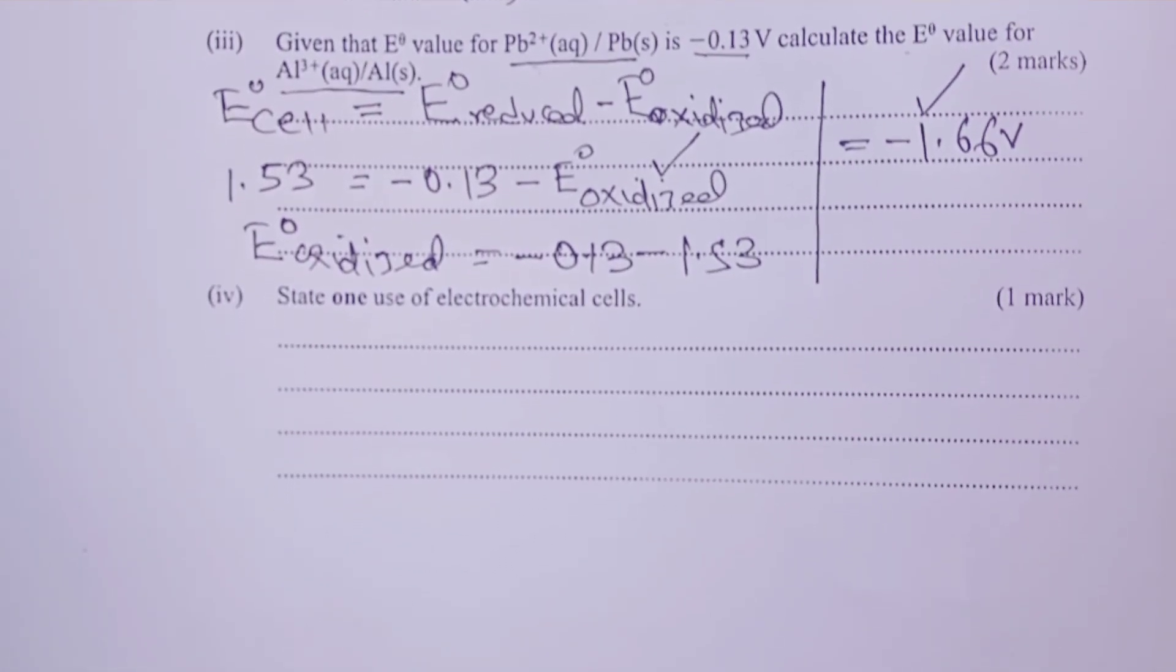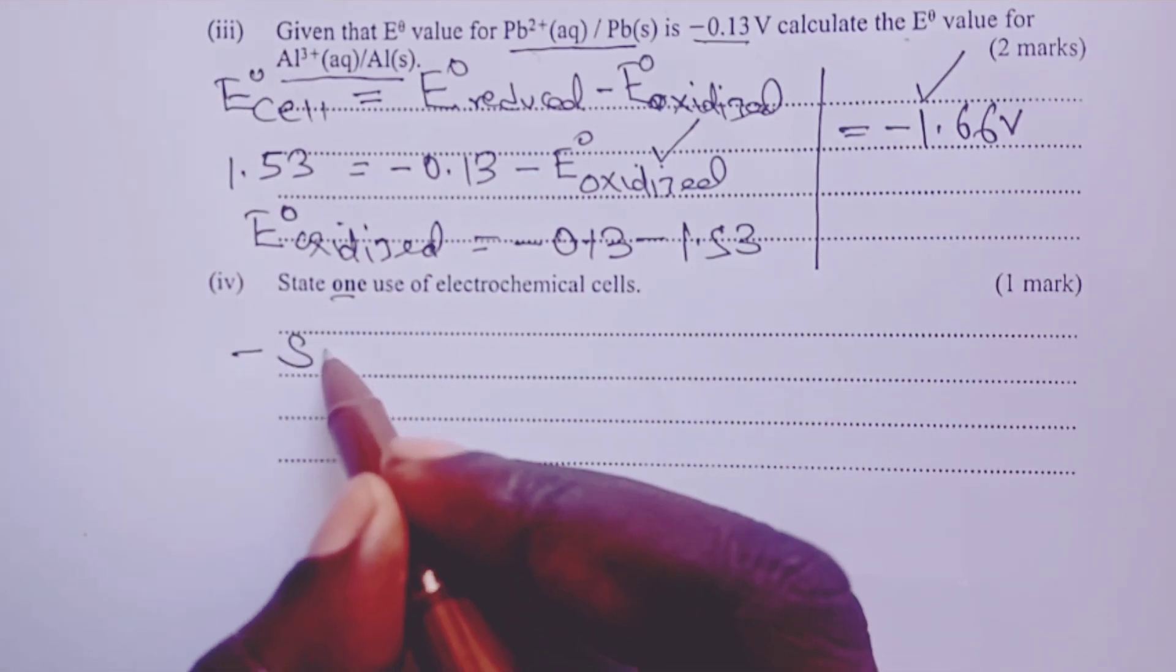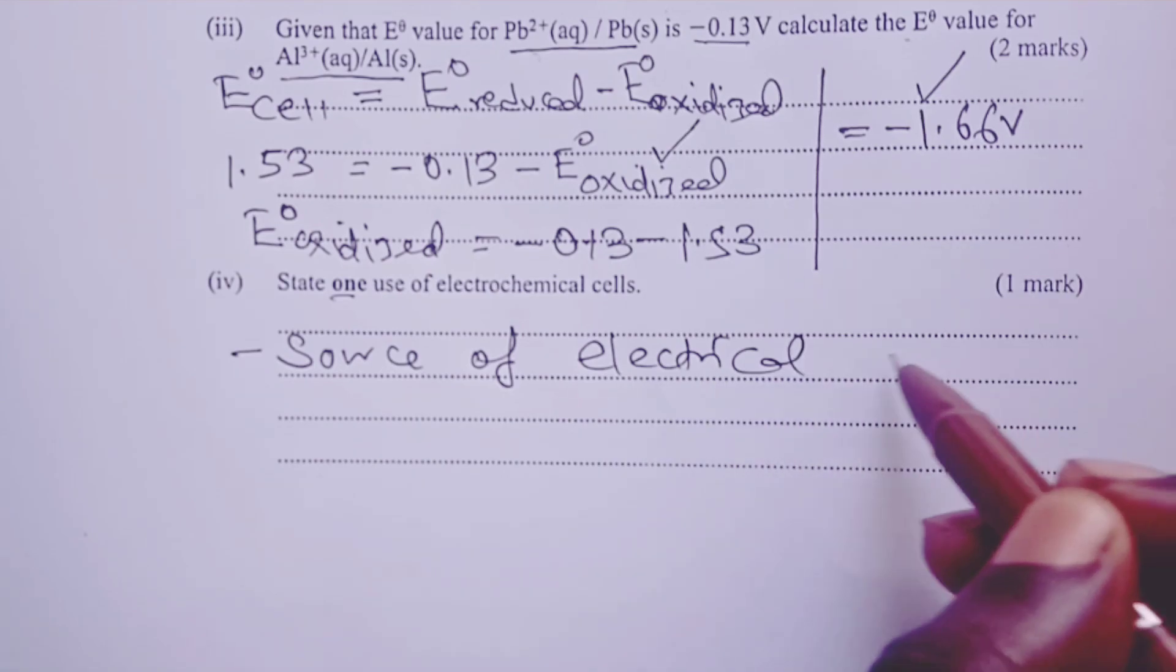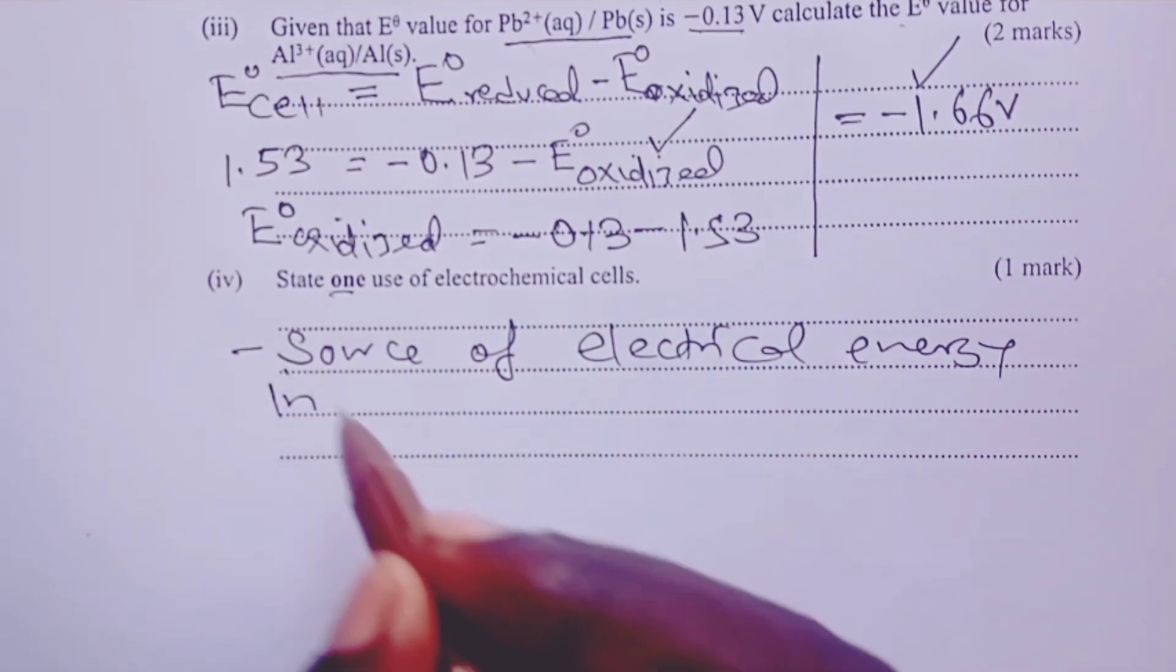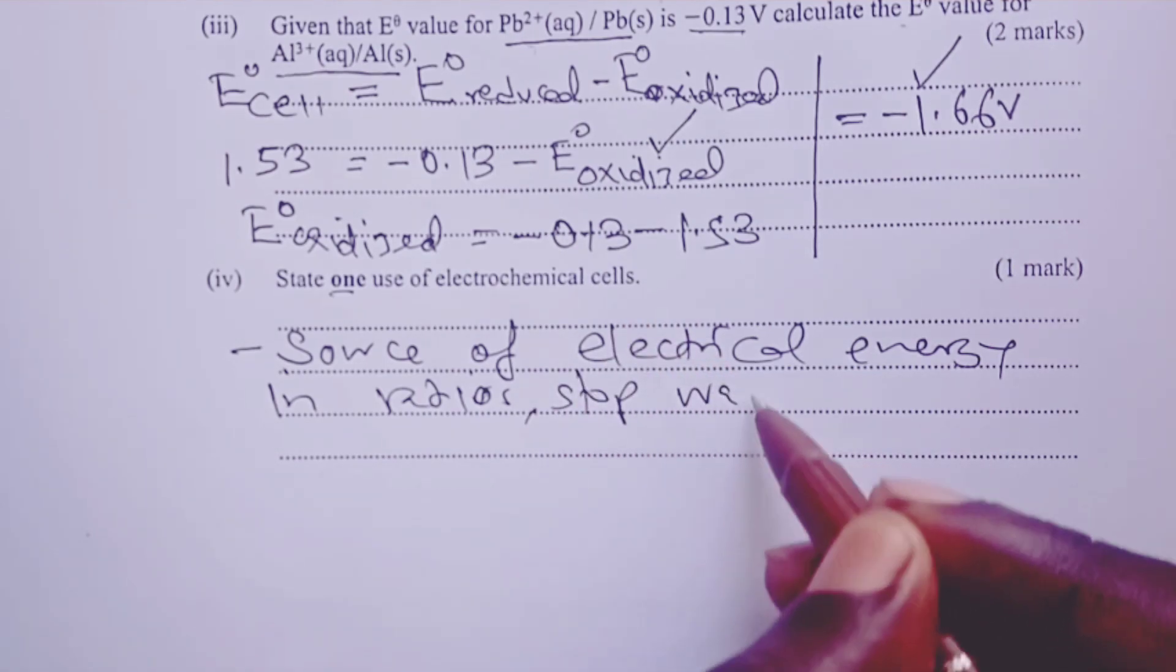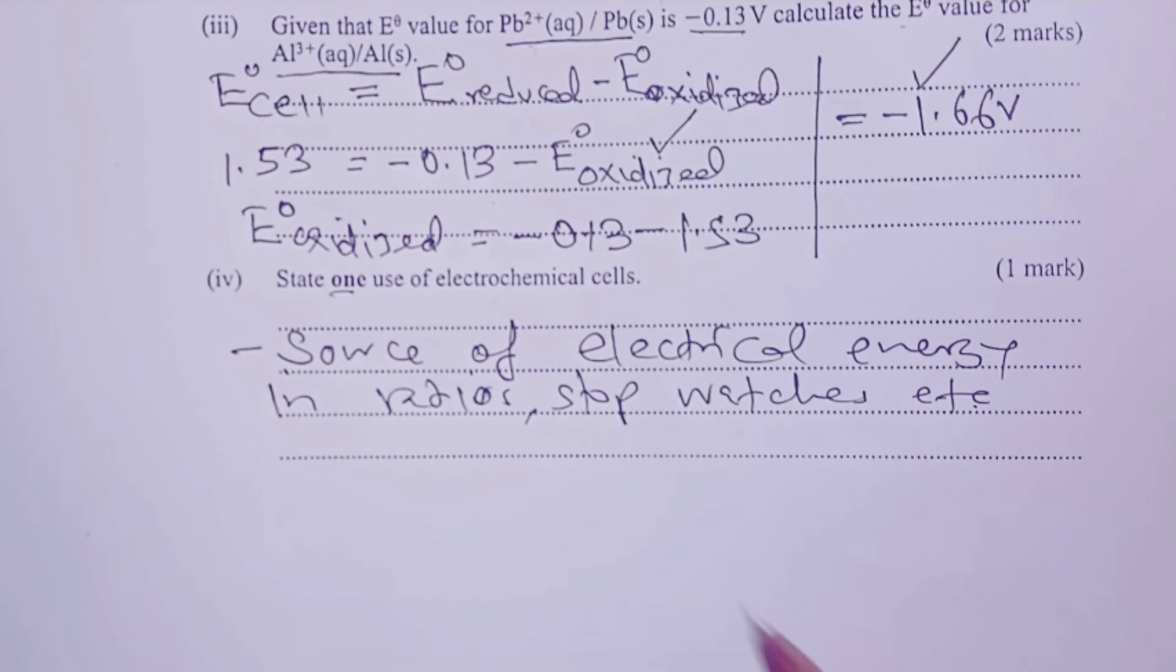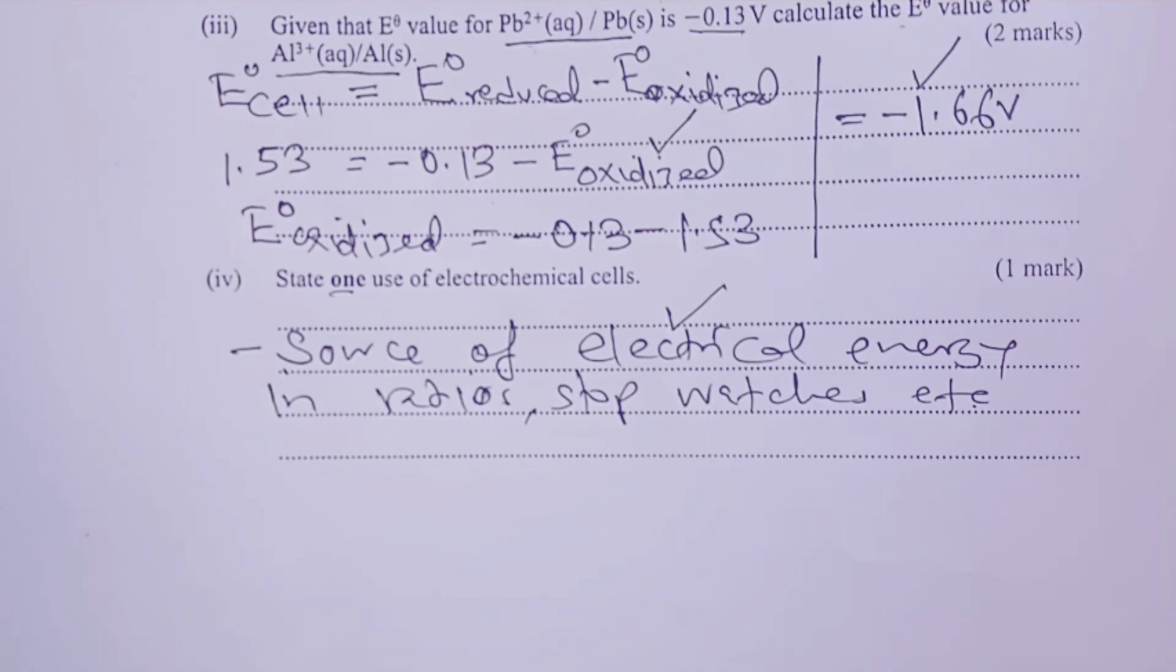Part four, state one use of electrochemical cells. Electrochemical cells are simply source of electrical energy. So this was the marking point, but a candidate would go ahead and tell us that once we obtain this electrical energy, then we use it in appliances like radios, like stopwatches, and many others. There are quite a number that we can't list to conclusion. So the marking point was electrochemical cells are source of electrical energy. We proceed to the next question.